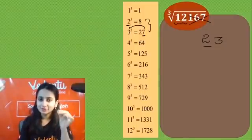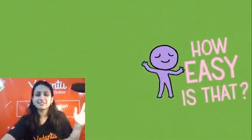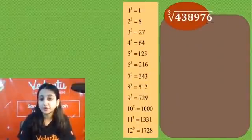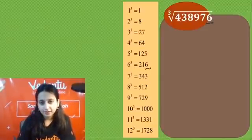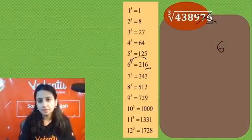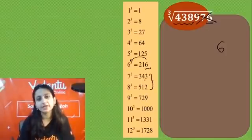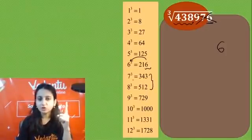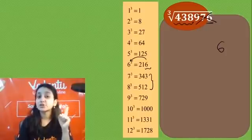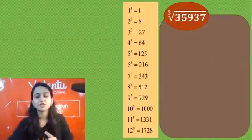If you're enjoying this, hit the like button and subscribe to the channel! Let's do more questions and practice — practice makes the man perfect. Ones place has 6, so corresponding number is 6. Discard 3 digits, left with 438. It lies between 343 and 512 — that's between 7³ and 8³. Take the smaller: 7. So 76 is the answer! Kuch bhi nahi tha!